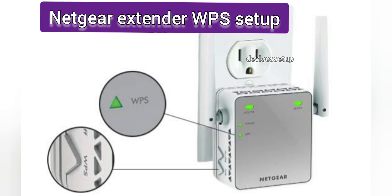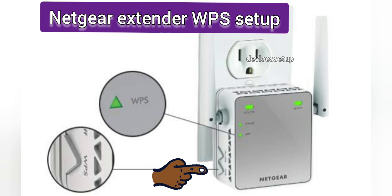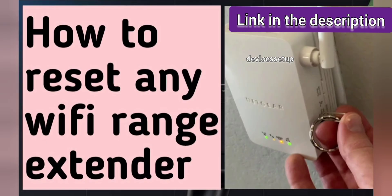Now if this method isn't working for you, try the second method: WPS setup, or Wi-Fi Protected Setup. But before this, just reset the extender once. Watch the video about how to reset any Wi-Fi extender — the link is in the description.